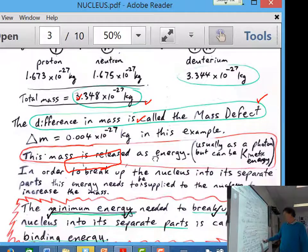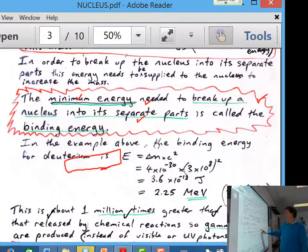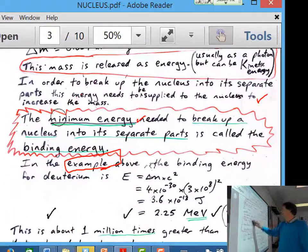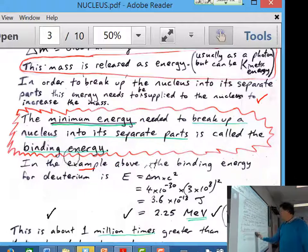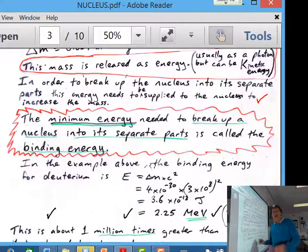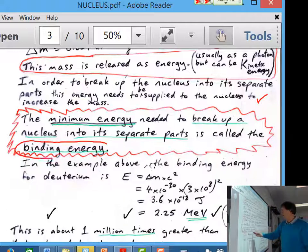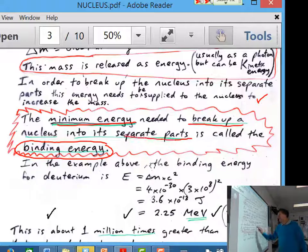So you can use E equals mc squared to work that out. Now that means that if you wanted to break the nucleus apart, you would need to put the mass back in somehow. So what you would normally have to do then is shoot energy at that in some form, like photons, and actually blast that apart, and the mass would be recovered and actually separated. So the energy required, or the minimum energy required, to break up a nucleus into its separate bits, is called the binding energy.